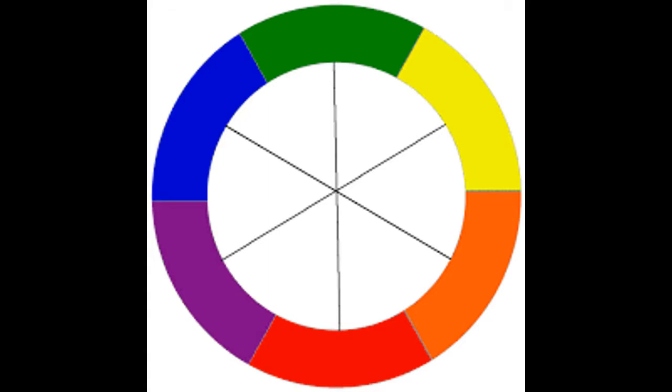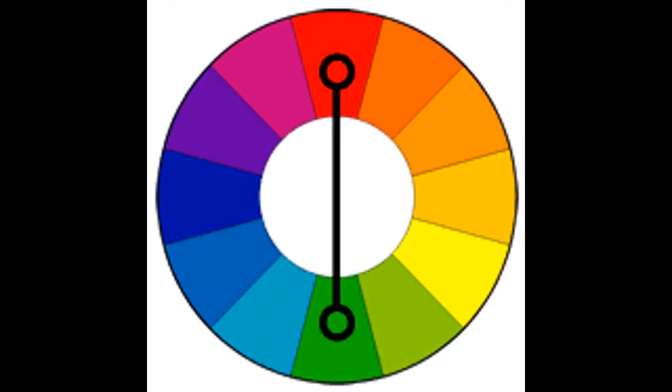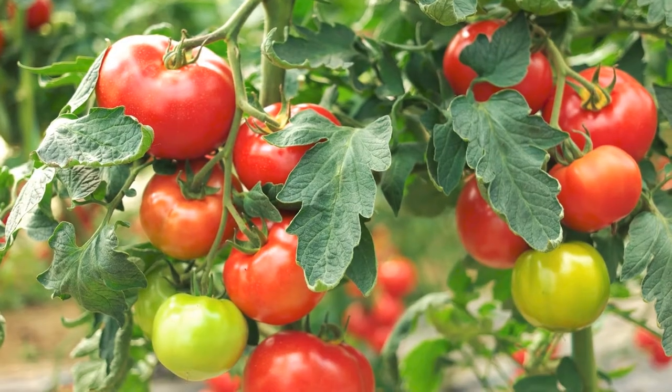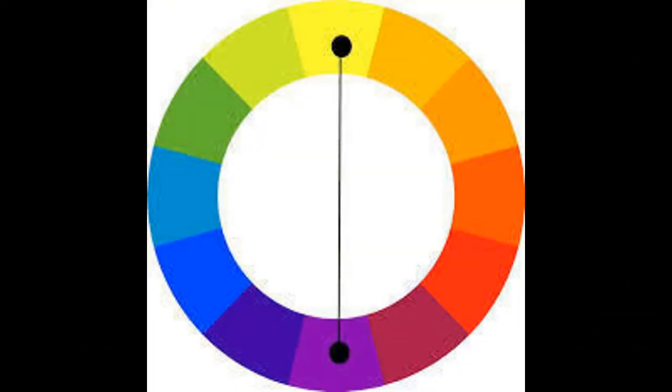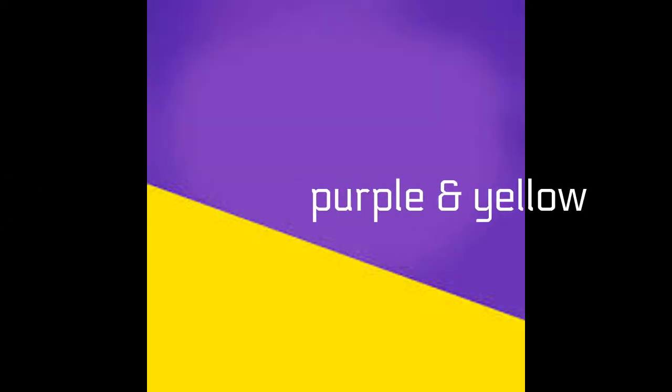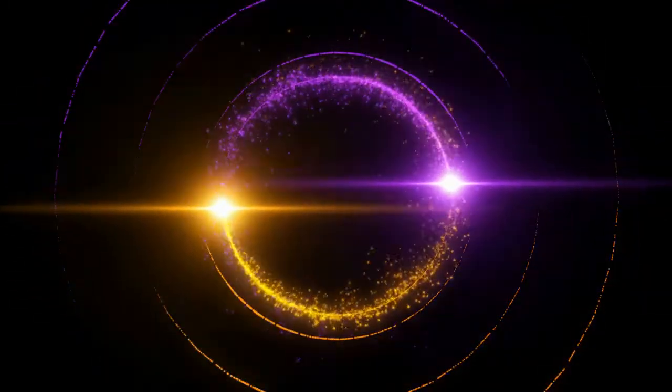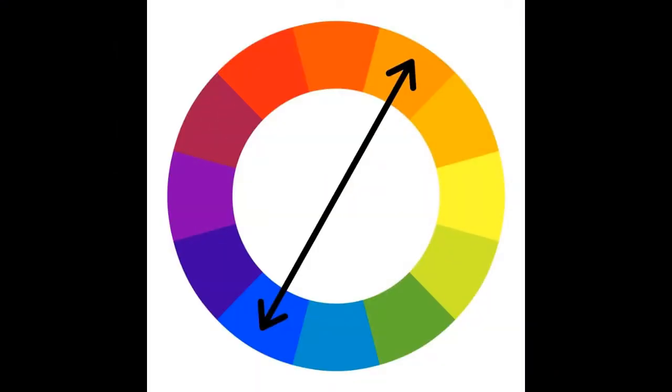Our first pair of complementary colors is red and green. Our second pair of complementary colors are purple and gold. Our last set of complementary colors are blue and orange.